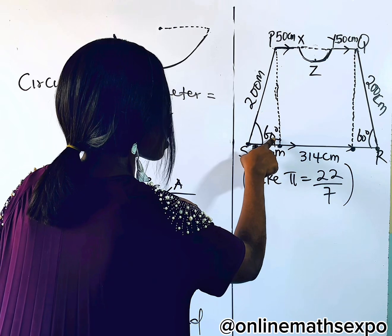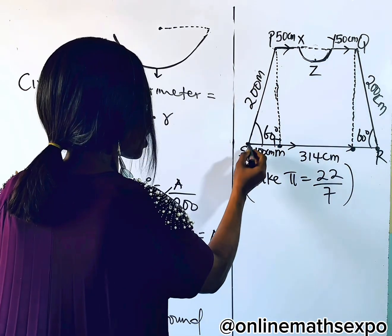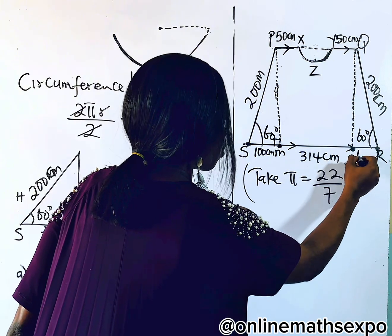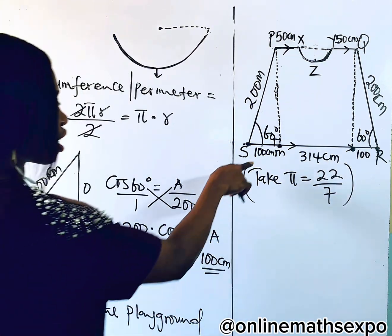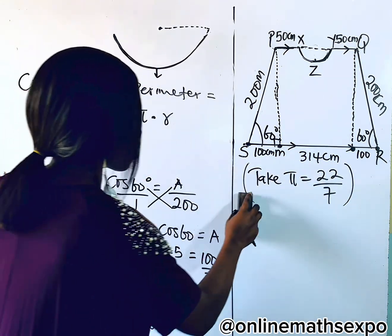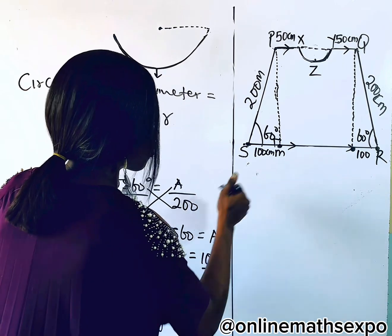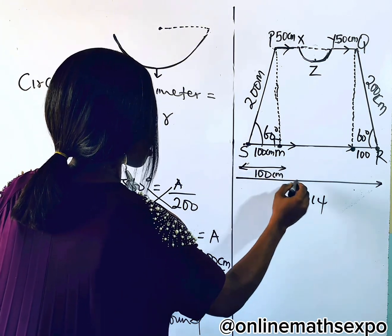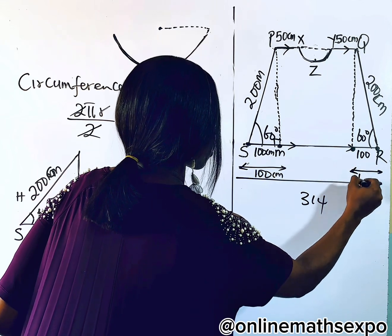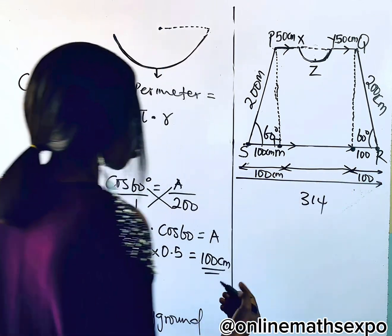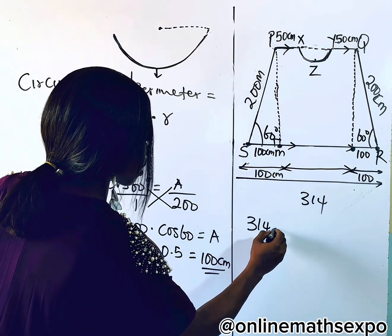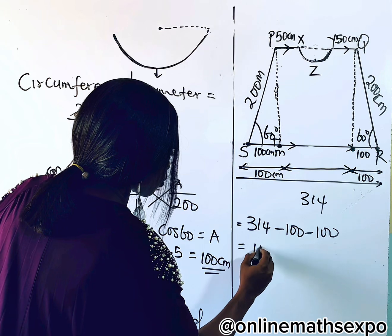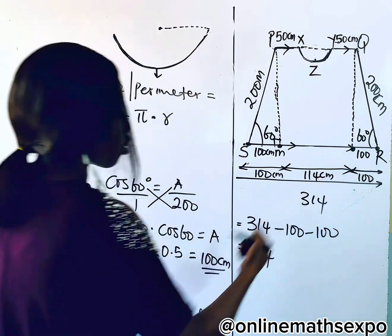Here is 60 and here is 60 — the length is the same. Whatever side you have is the same on both sides. So if here is 100, here will also be 100. Since from here to here is 314, from here to here is 100 centimeters, and from here to here is also 100, then: 314 minus 100 minus 100 gives you 114. So this length is 114 centimeters.